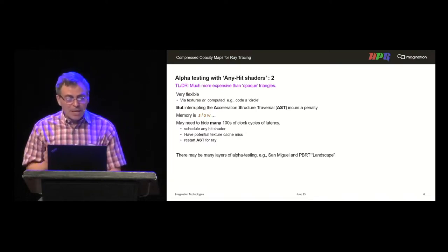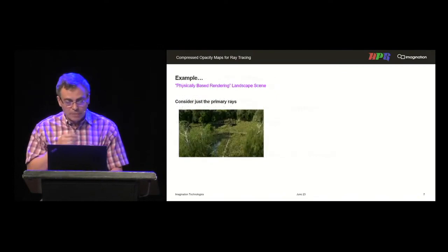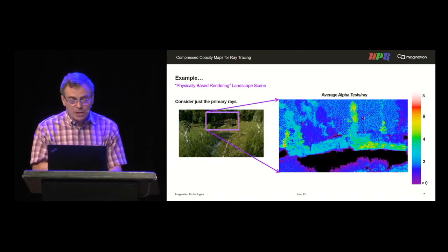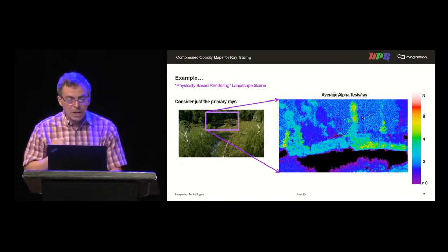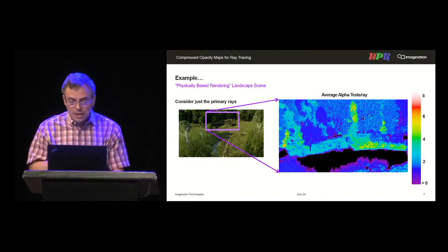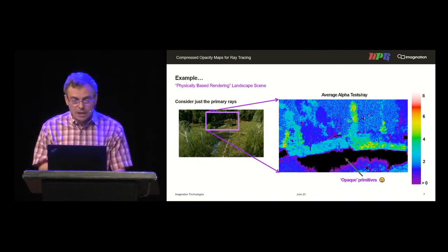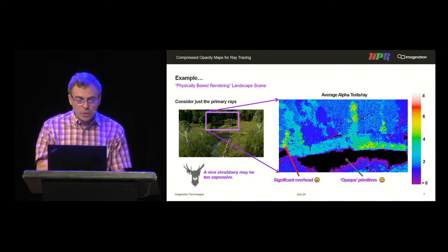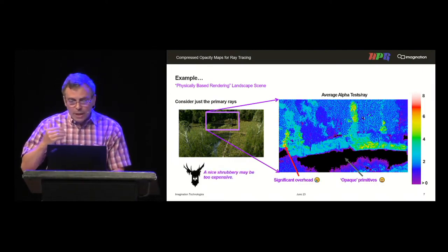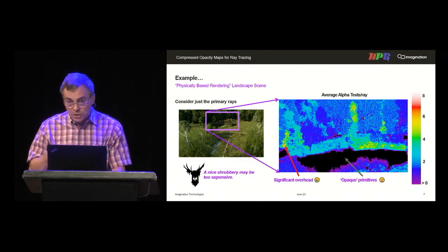There may also be many layers of alpha testing. For example, in San Miguel or the physically-based rendering landscape scene, looking at just a zoomed-in section, this shows the average number of alpha tests for primary rays. You can see regions with opaque triangles having none at all, but regions where you're doing upwards of six to ten tests. So it's a significant overhead.